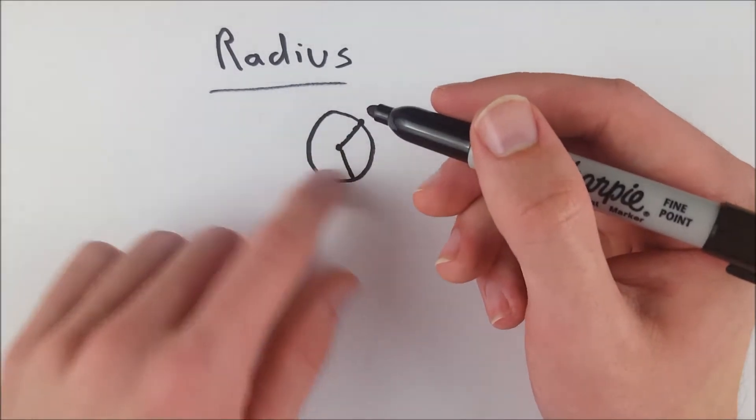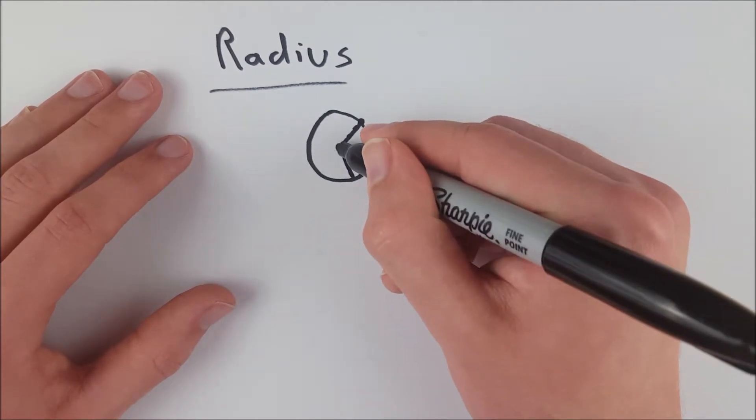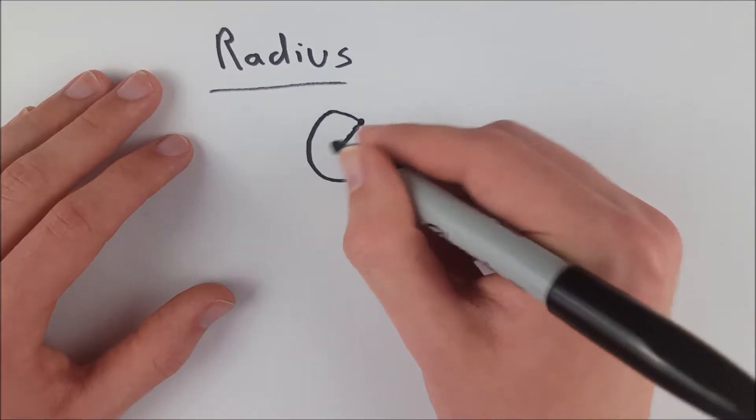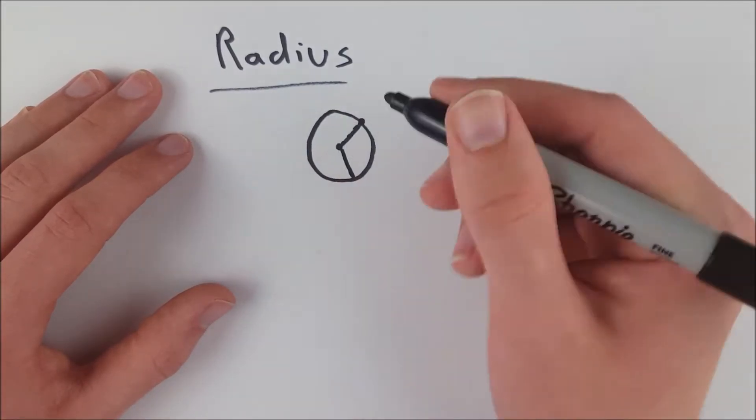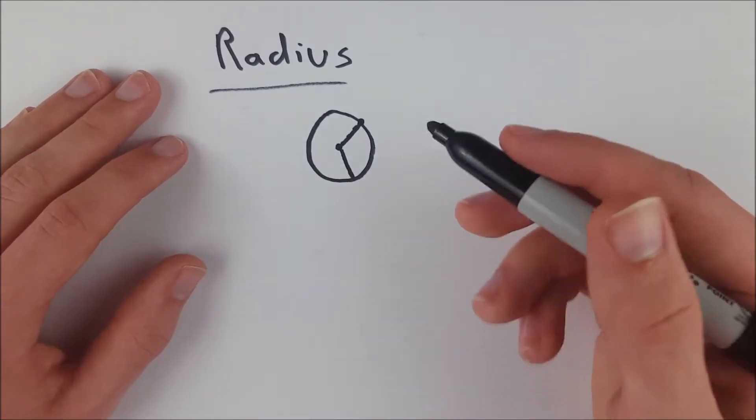Because a circle is defined by the set of all points equidistant from one center point. So we know that the length from a center point to any point on the circle itself will be equal, and the length of that segment is what we call the radius.